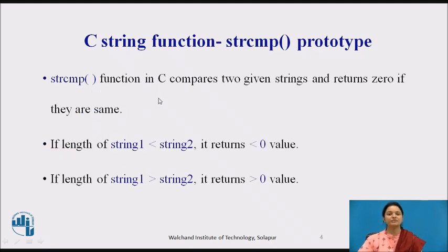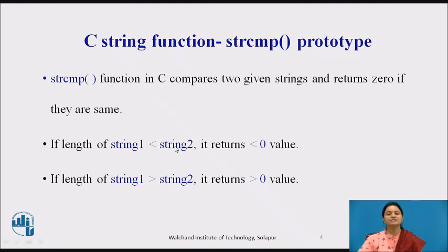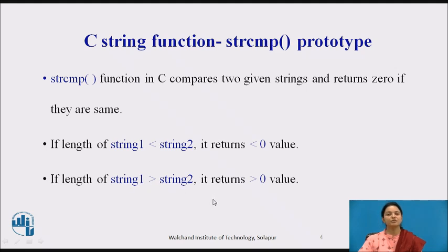The strcmp function in C compares two given strings and returns 0 if they are the same. If the length of string 1 is less than string 2, it returns a value less than 0. If the length of string 1 is greater than string 2, it returns a value greater than 0.